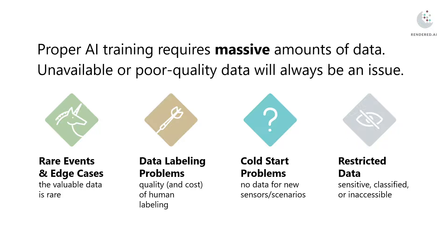Natural problem. Furthermore, the things that we do have data on are often mislabeled. It's harder than you might think to get high accuracy in your labeling, and any noise in that labeling directly impacts the performance of your algorithms.